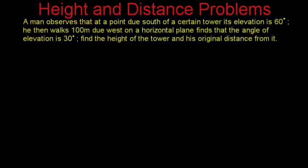Here we have one more problem based on height and distance, and this problem is slightly complicated. The problem statement says: a man observes at a point due south on a certain tower, its elevation is 60 degrees. Then he walks 100 meters due west on a horizontal plane and finds that the angle of elevation is 30 degrees. Find the height of the tower and its original distance from it.